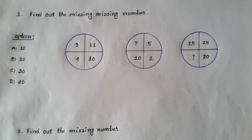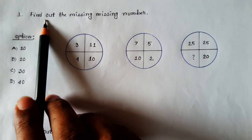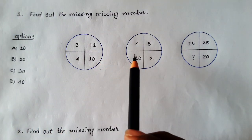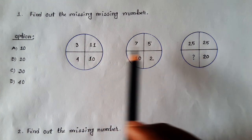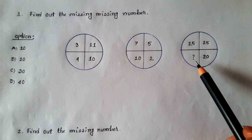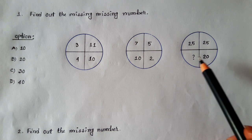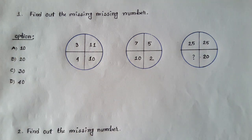Here we are going to do Mental Ability Practice Session 2. This is the first problem. Find out the missing number. If there are 3 circles, 4 circles, even 3 circles, and 1 of them. This is the key answer and the option to maintain the answer. So let's go ahead and clarify.